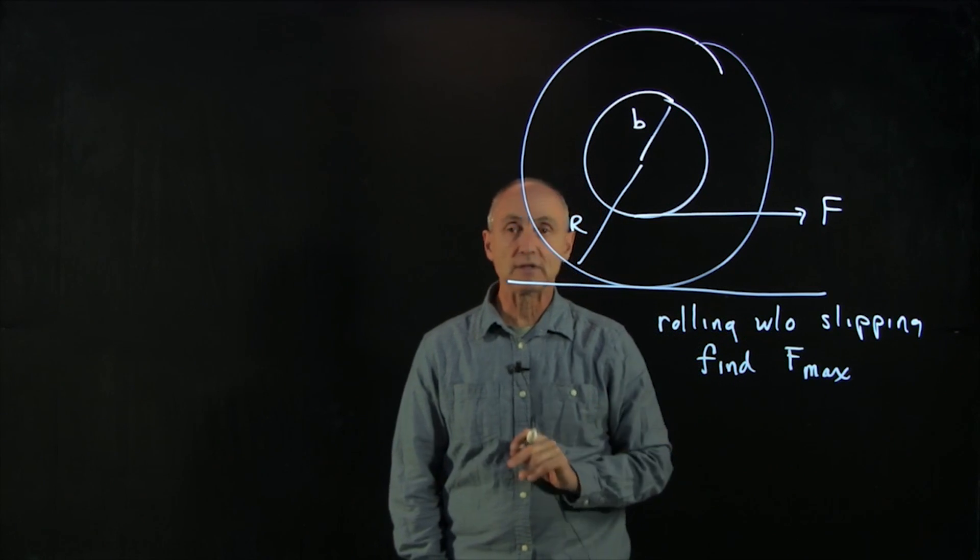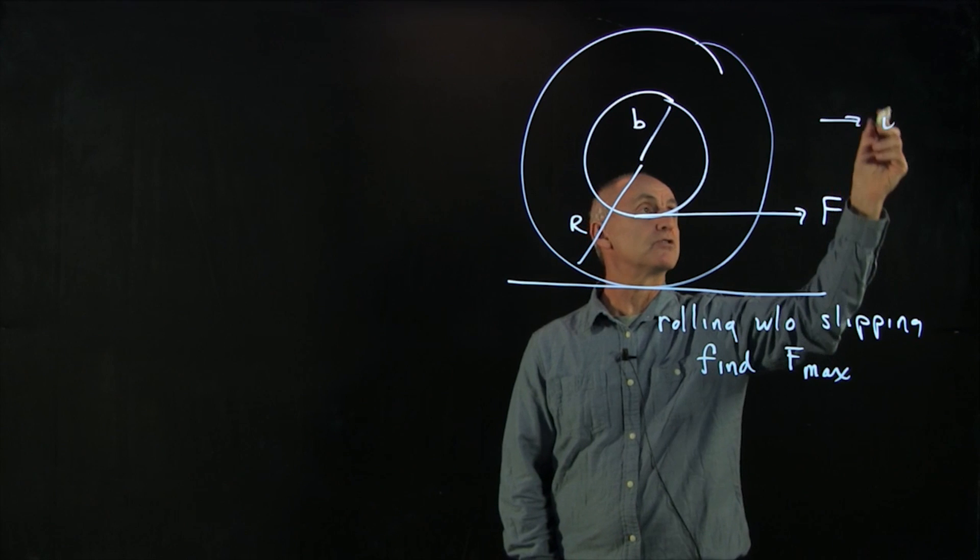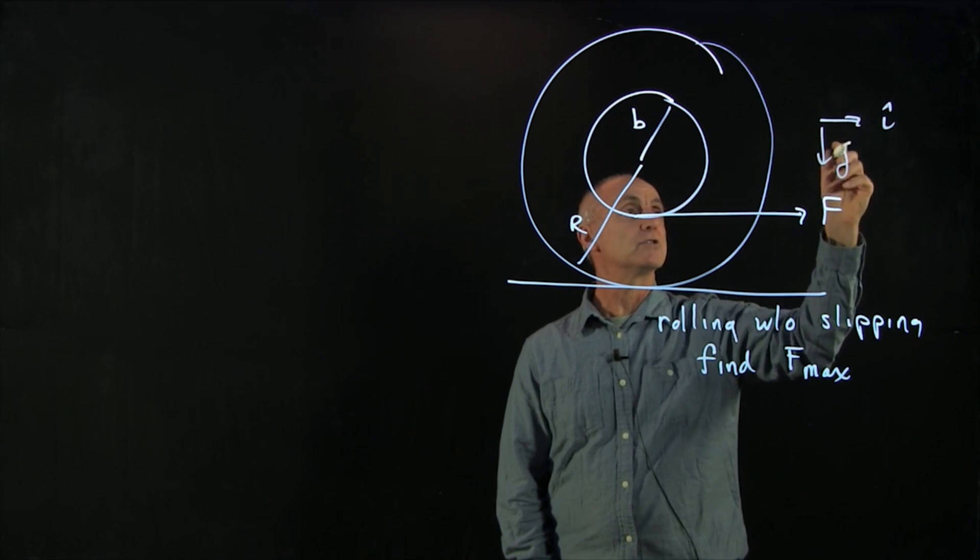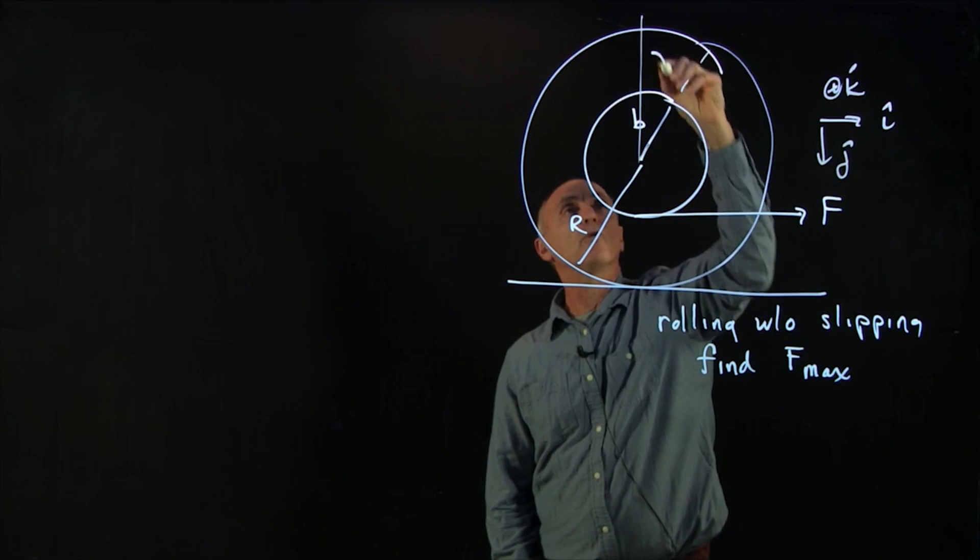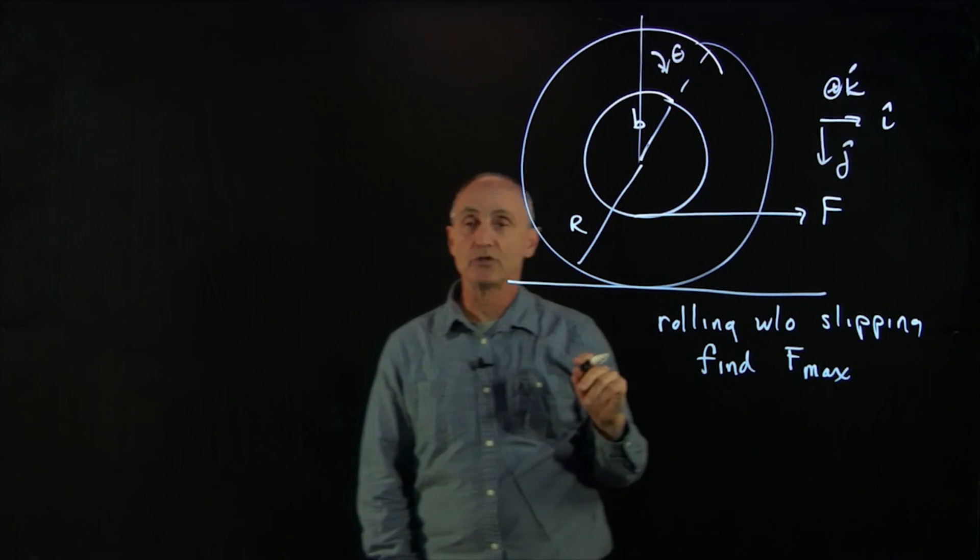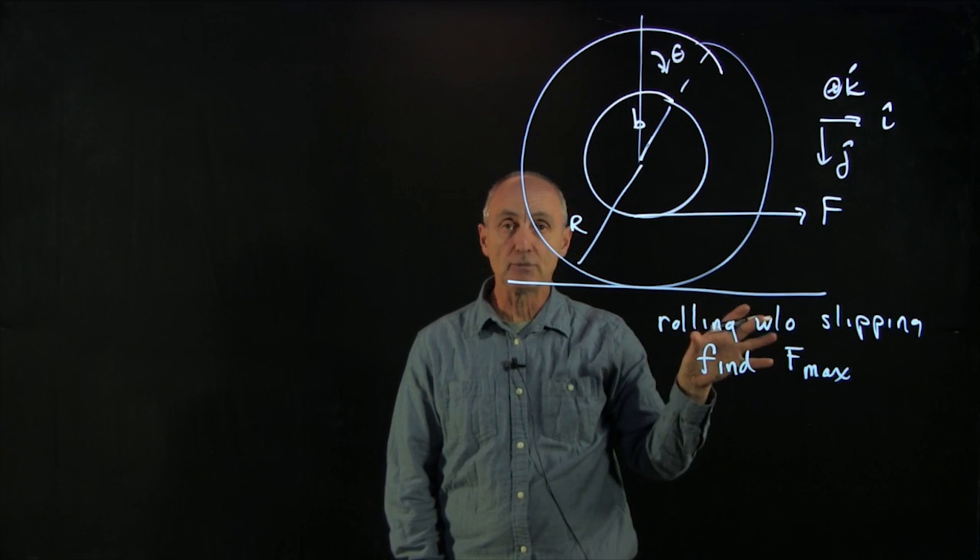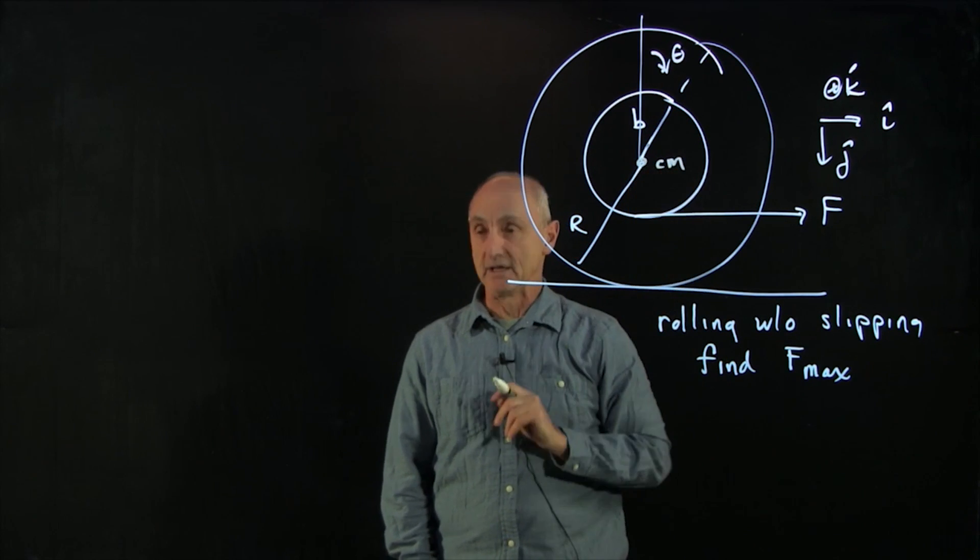So now let's analyze this problem. And let's use our dynamics approach. Let's choose an i hat, a j hat, k hat. As before, we'll define an angle theta. And now we'll apply both Newton's second law for linear motion and our torque about the center of mass.